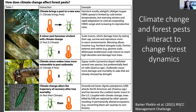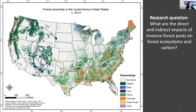As we think about mitigating climate change, forests — especially in the Northeast — are a big part of that. My research question for this talk is: what are the direct and indirect impacts of invasive forest pests on forest ecosystems and carbon? We want to think about the forest as a whole, not just the carbon impact.